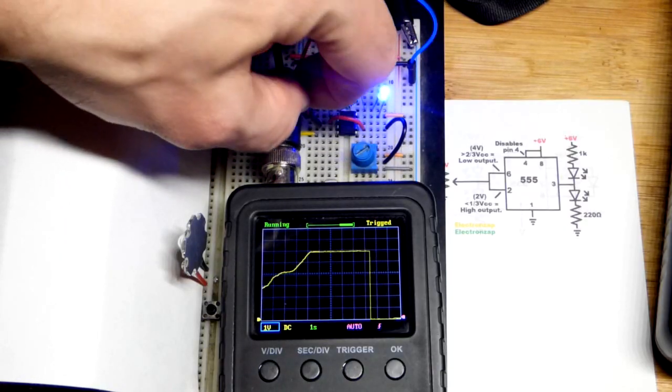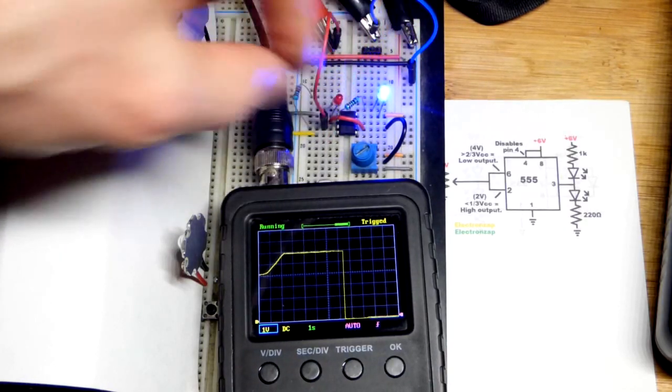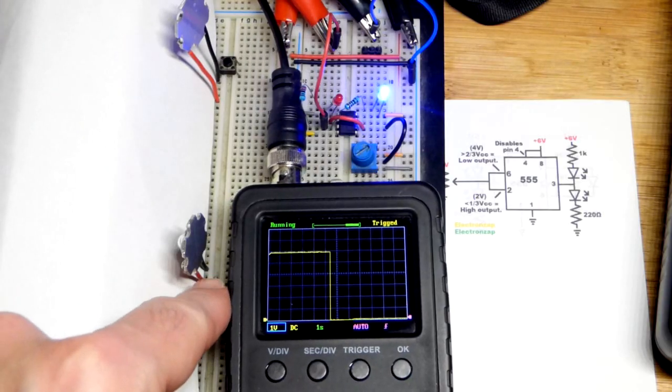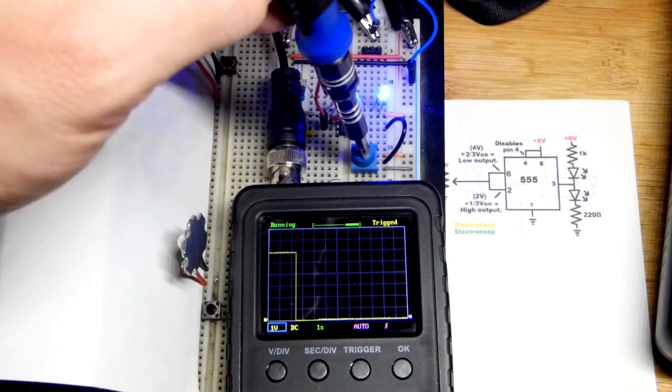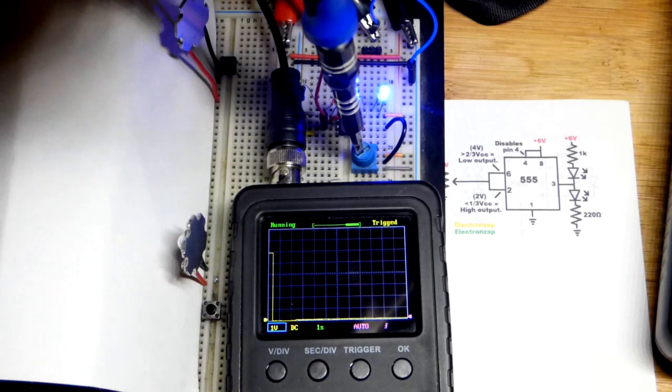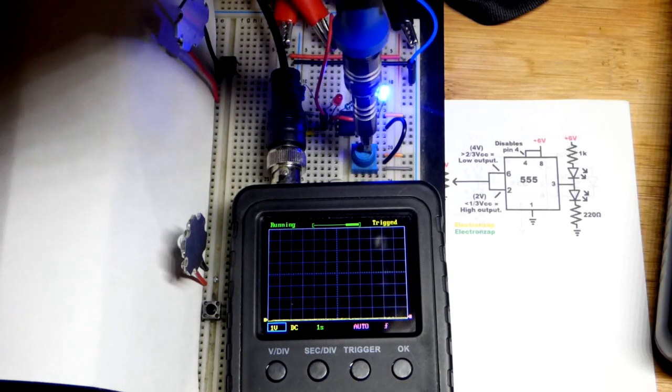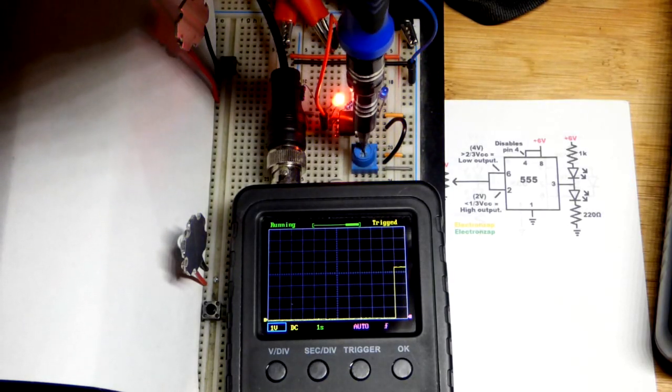Now we're going to look at the output, that's where the two resistors are connected together. There you can see we got our low output because our signal voltage is high enough. It's six volts. Now I'm going to drop it below two volts and the output goes high.